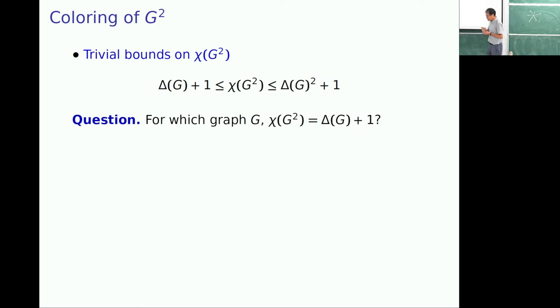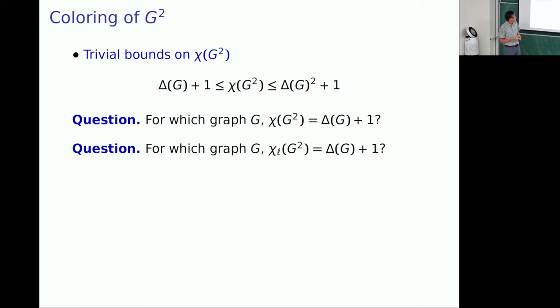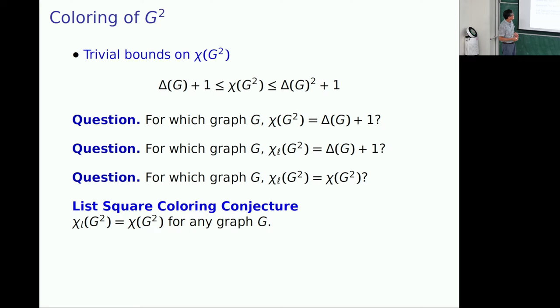So, maybe early stage, the interesting problem, question was, which graph is equal for this? So, what kind of graph has such equality? And also, people think about the list version. And another direction is the list square coloring conjecture is for square graph G, then the choice number and chromatic number is same. And if this is true, then total coloring conjecture is true.